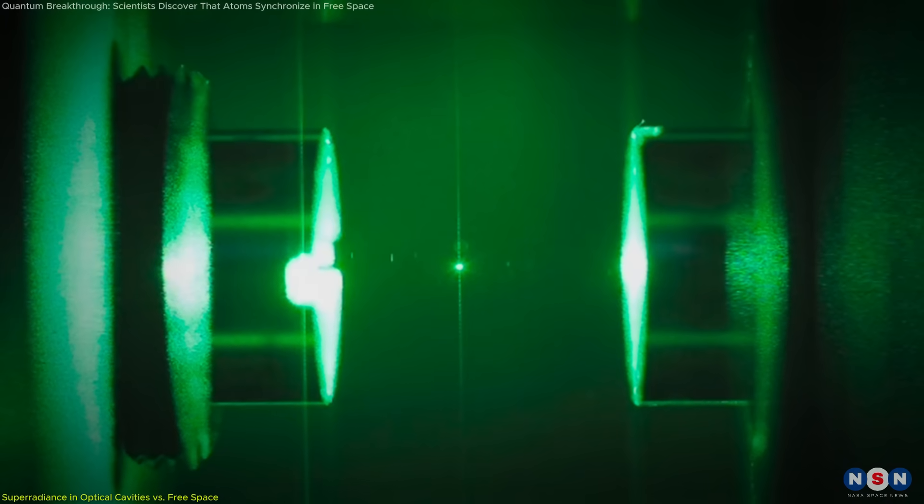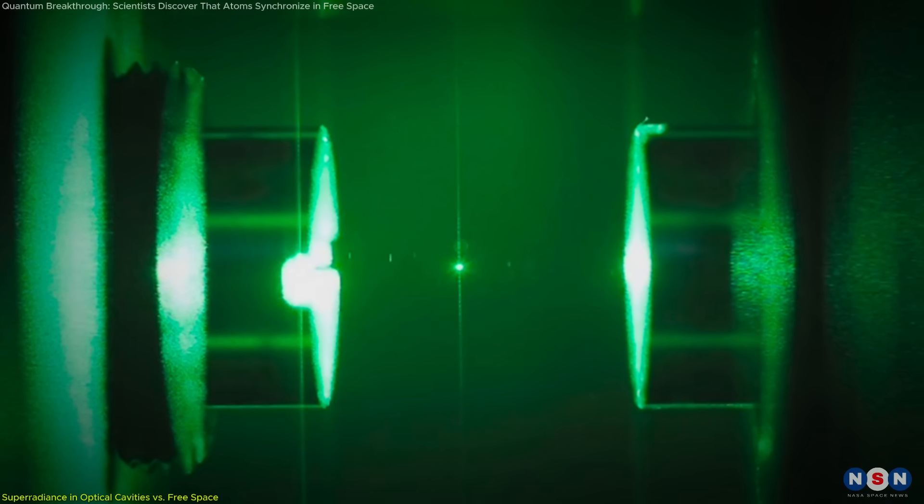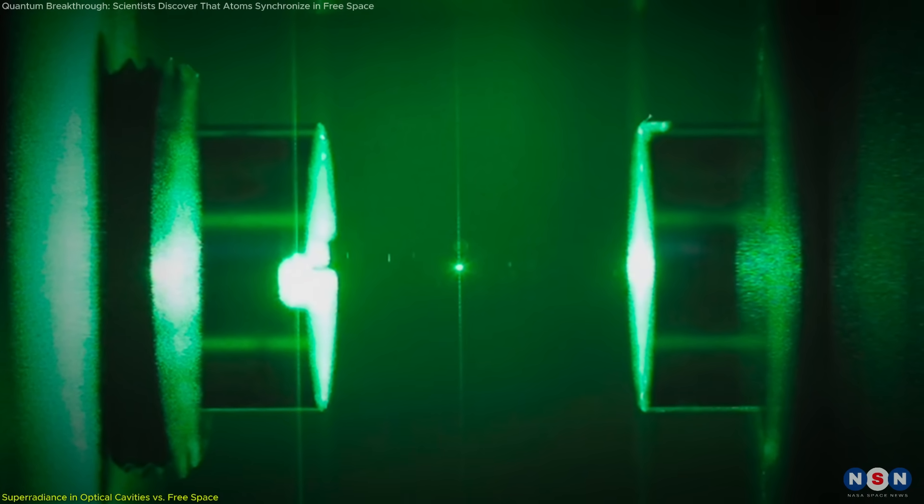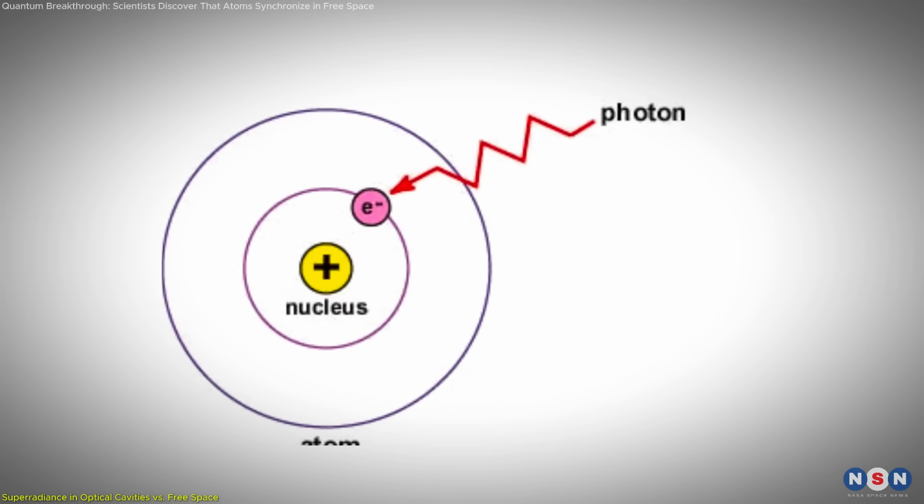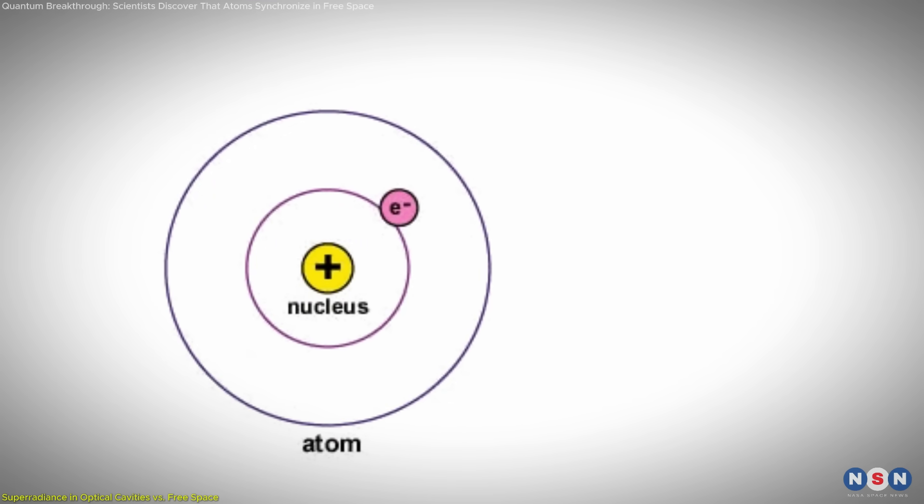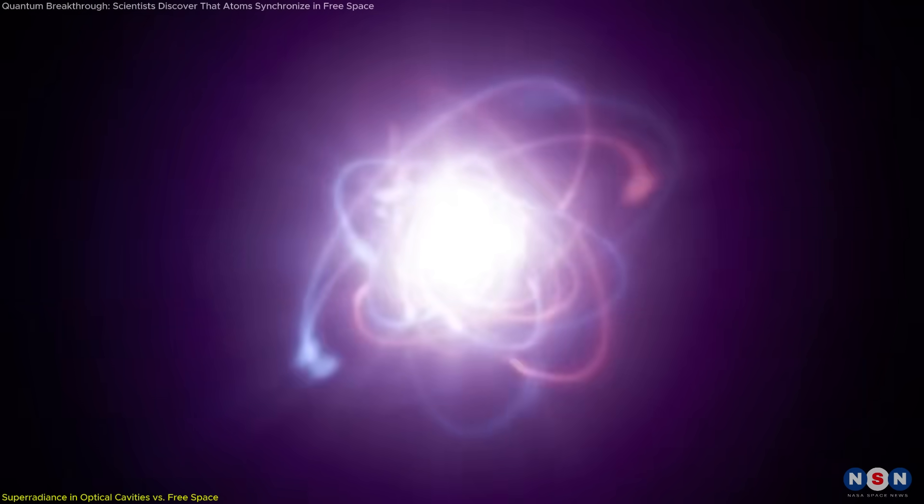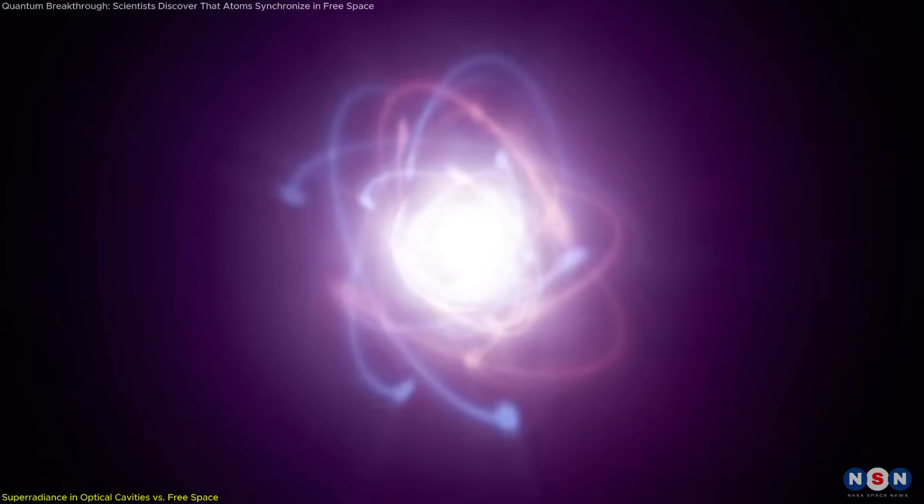This phenomenon occurs because the mirrored walls of the cavity allow photons to bounce back and forth, creating a feedback loop. Atoms absorb these photons and re-emit them, aligning their emissions to create a collective, amplified output.